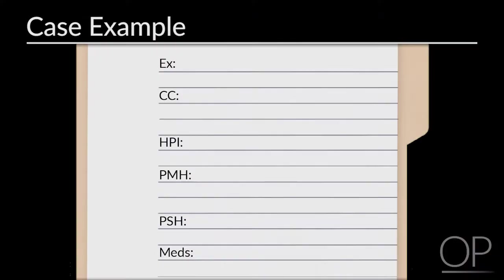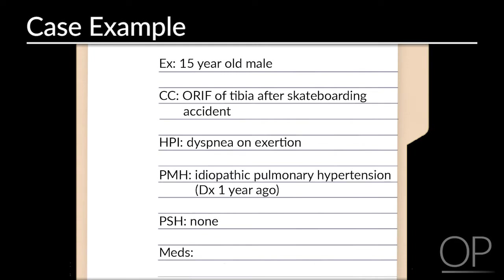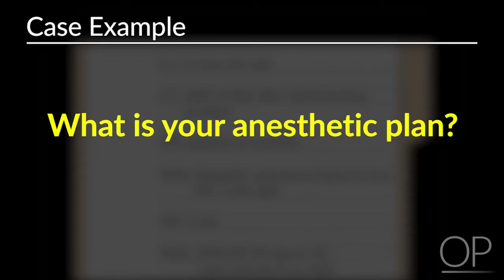Let's look at a case example. The patient is a 15-year-old male evaluated prior to an open reduction internal fixation of his tibia, sustained after falling while skateboarding. He was diagnosed with pulmonary hypertension one year ago after a syncopal event, reports occasional dyspnea on exertion. His past medical history includes idiopathic pulmonary hypertension, he has never had surgery, and his medications include sildenafil. He uses nasal cannula oxygen at night. What is your anesthetic plan for this patient?